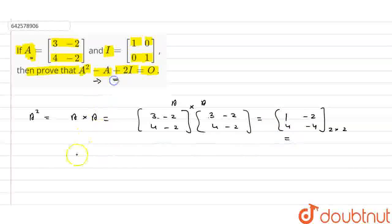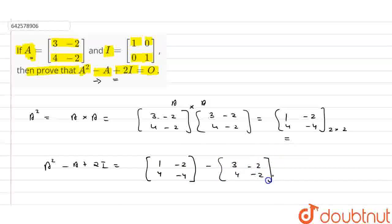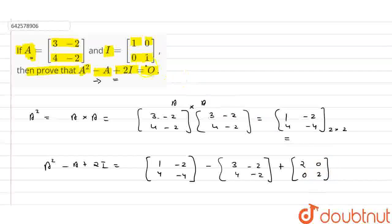Now for proving the equation A squared minus A plus 2I, we substitute: A squared is [[1, -2], [4, -4]], minus A which is [[3, -2], [4, -2]], plus 2I where 2I is 2 multiplied by the identity matrix, giving [[2, 0], [0, 2]].